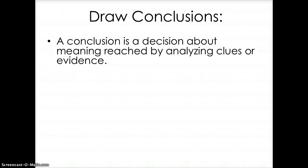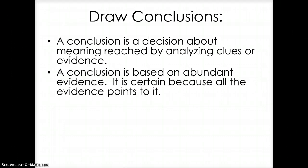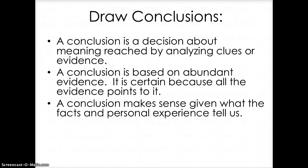A conclusion is a decision about meaning reached by analyzing clues or evidence. We look at different pieces, pull out important information and clues, and then put those clues together to come to a conclusion. A conclusion is based on abundant evidence — it is certain because all the evidence points to it. If there are four or five different things pointing to one thing, that's what we're looking for. In our next section on mysteries, writers use red herrings — clues that don't lead anywhere — but when drawing conclusions, we want all clues and evidence pointing in one direction.